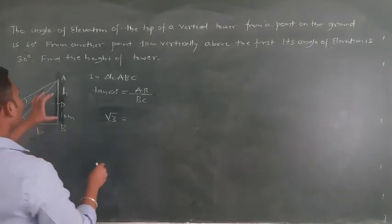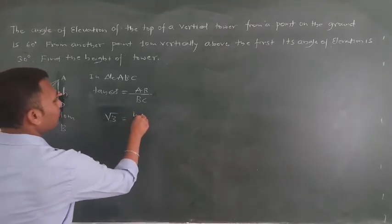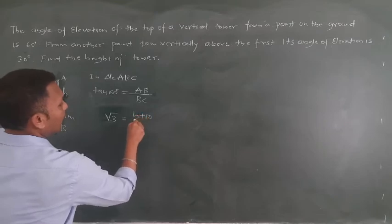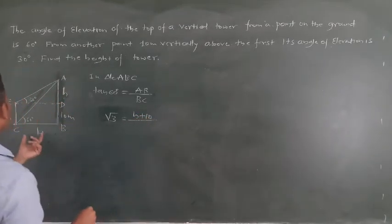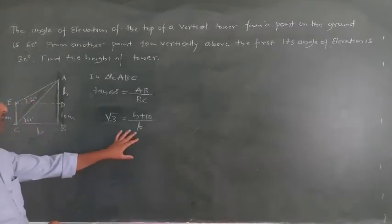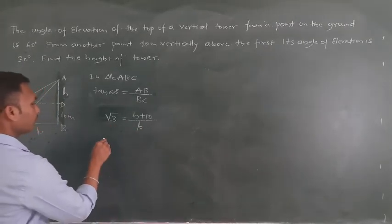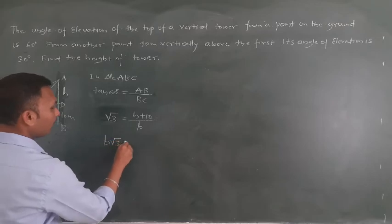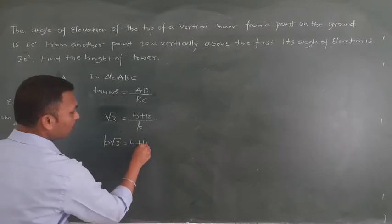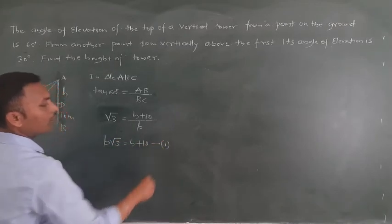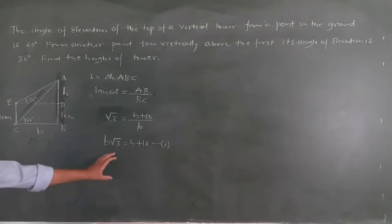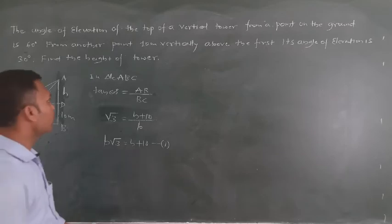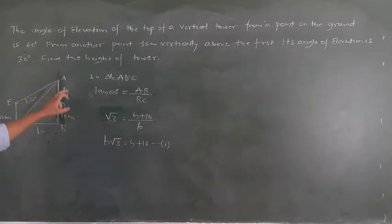Tan of 60 degrees is root 3. So root 3 equals AB over BC, where AB is h plus 10 and BC is b. Cross multiplying: b times root 3 equals h plus 10. We call this Equation 1.